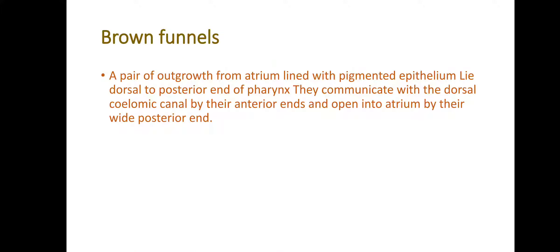The next excretory structure is called brown funnels. They have a pair of outgrowths in the atrium. The atrium is lined with pigmented epithelium. They are present dorsal to the posterior end of the pharynx. They communicate with the dorsal coelomic canal, while the broad posterior end is open in the atrium. The anterior end opens into the epibrachial and dorsal coelomic canal. Most zoologists consider brown funnels to be excretory, while some regard them as receptor organs.